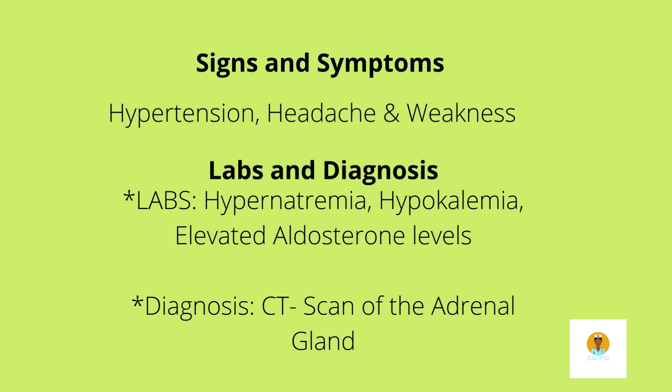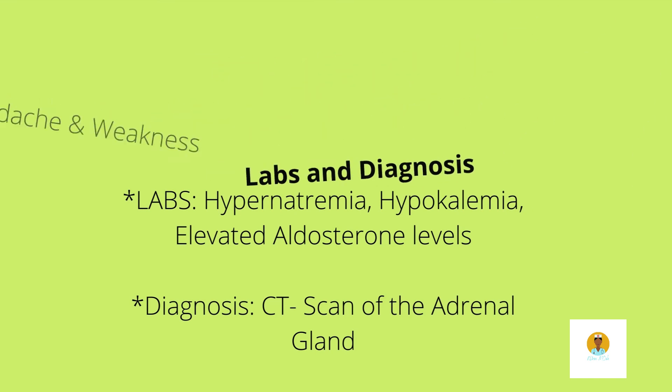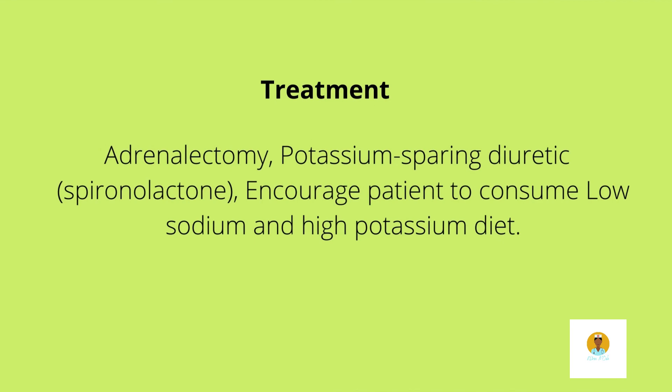Signs and symptoms include hypertension, headache, and weakness. Labs will show hypokalemia, increased aldosterone levels, and hypernatremia. We can diagnose this through a CT scan of the adrenal gland. Treatment includes adrenalectomy. We can also administer potassium-sparing diuretics like spironolactone. Since we are wasting a lot of potassium, we need to replenish it — remember that potassium irregularities can lead to dysrhythmias. We should encourage the patient to consume foods low in sodium and high in potassium.